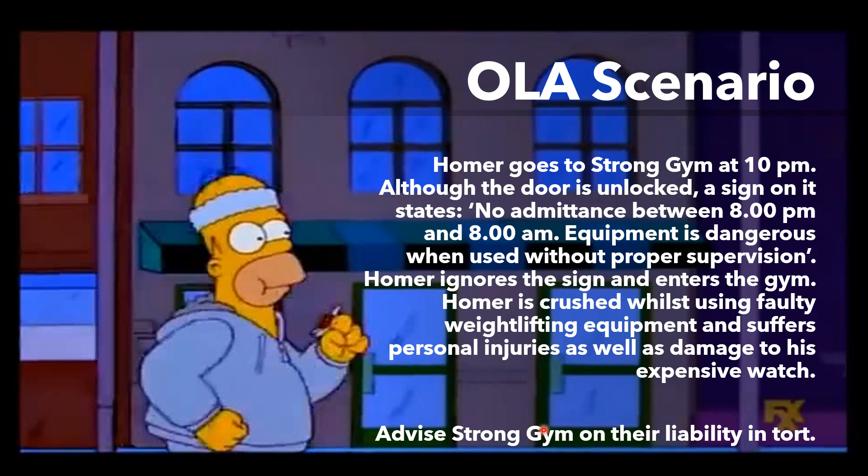Trespass scenarios are actionable as of right — you don't need to have any injury or suffer any harm. They usually appear in scenarios where somebody's washing line is hanging over a fence or someone leaves their gardening tools on a neighbour's path. Whereas here, we've got a character going in somewhere and being injured, so that tells me it needs to be Occupier's Liability that I'm looking at.